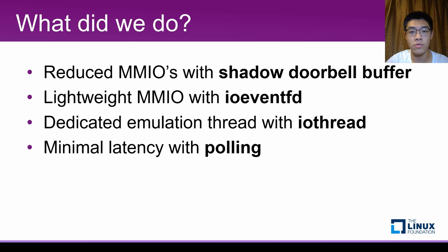The optimizations to implement were already pretty well defined by the project. First, reduce the amount of memory mapped writes causing VM exits by adding support for so-called shadow doorbell buffers. Second, reduce the impact of the remaining MMIOs by making them cheaper using the IOEventFD mechanism. Third, run the emulation in a dedicated thread using an IO thread. Finally, introduce polling of submission queues to reduce latency.